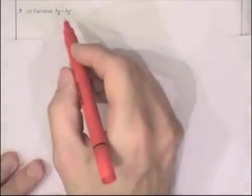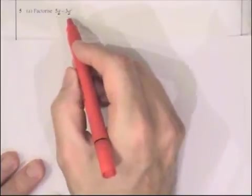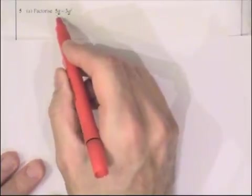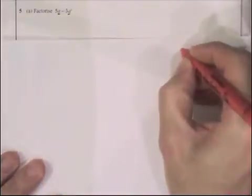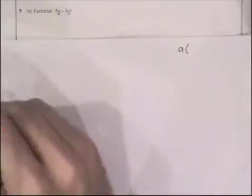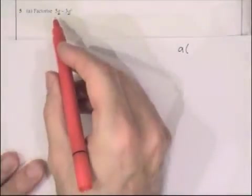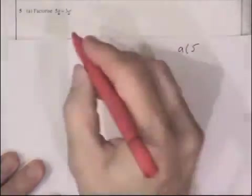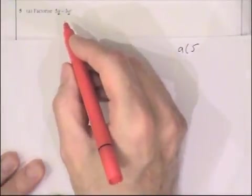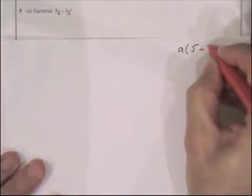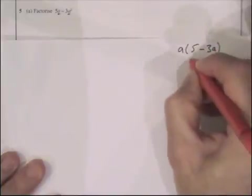Question 5a asks us to factorise 5a minus 3a squared. Look for a common factor. What is common to both terms? A is common to both terms, so it's a that we put outside a bracket. Now to put the inside of the bracket, we've got to take the a out of 5a. That gives us a 5. Then we've got to take the a out of minus 3a squared. That's going to give us minus 3a. And that is it factorised.